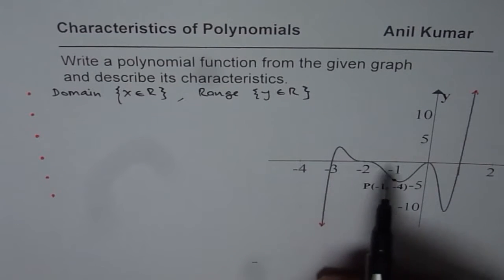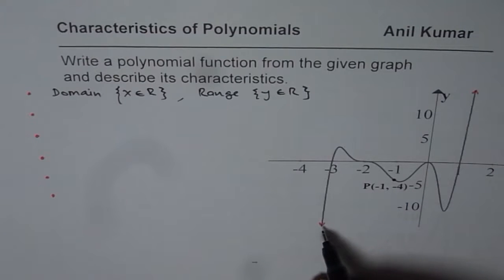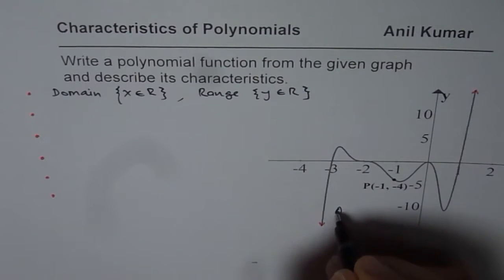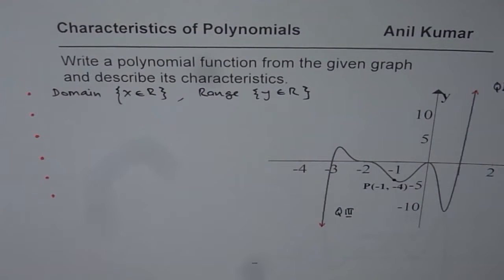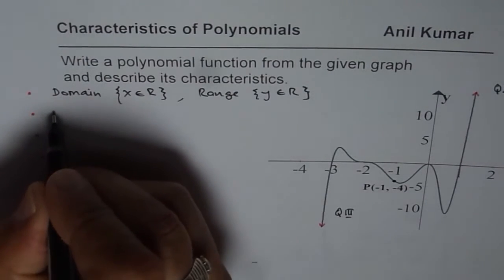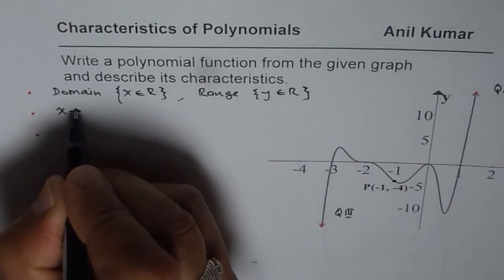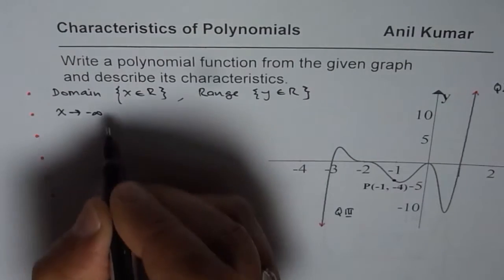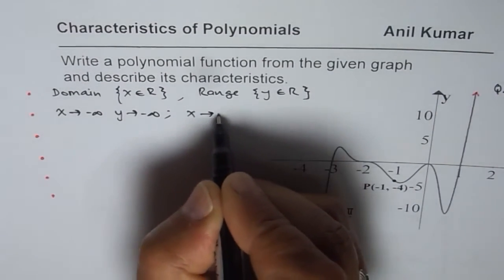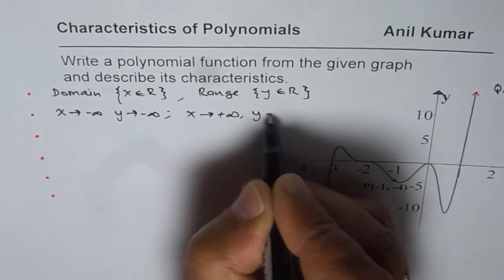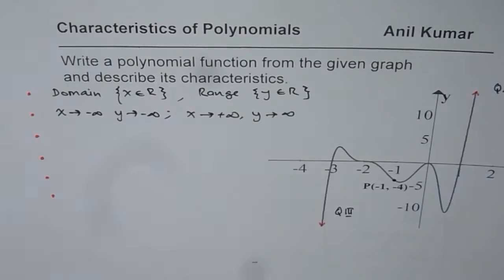Now next, we notice the end behavior. And from here we see that it goes from quadrant 3 to quadrant 1, right side is up. So we can write end behavior. When x approaches negative infinity, y approaches negative infinity. And when x approaches positive infinity, y also approaches positive infinity.